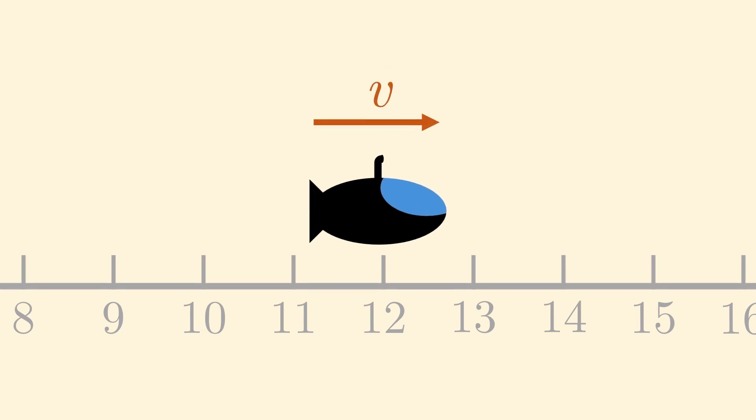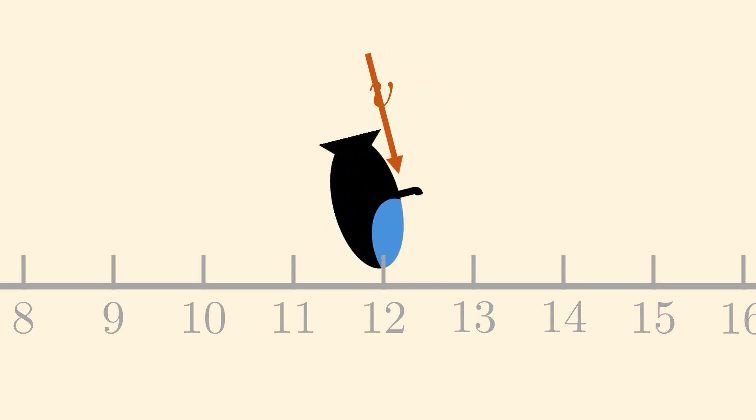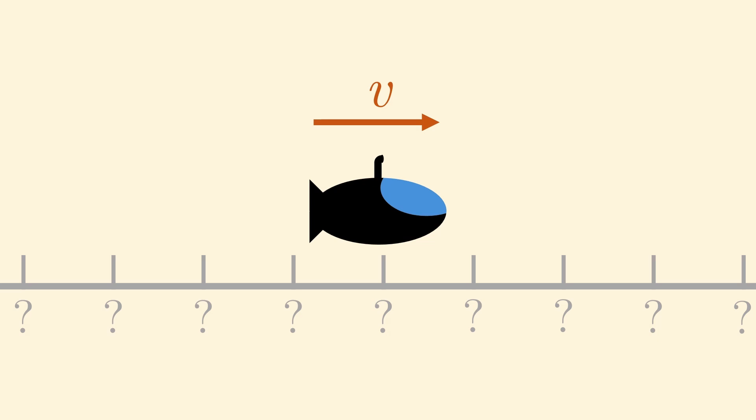The velocity could also be negative. That is, the submarine could be moving left or right. We also don't know where it starts. It could be minus five or a million. Whatever it is, let's call it x0.